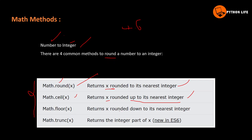Math.floor(x) rounds down to its nearest integer — it returns x down to its nearest integer. So for 4.6, Math.floor gives 4. Math.ceil is the ceiling function — for 4.6, ceil rounds up to 5, while floor gives 4.